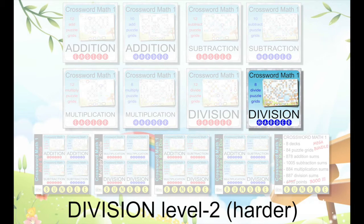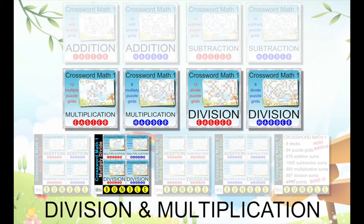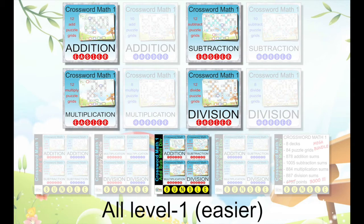Decks are available individually, but also in the following bundles. All addition and subtraction decks. All multiplication and division decks. All the level 1 decks, which include easier sums, including numbers up to 10, 20, 50, and 100.